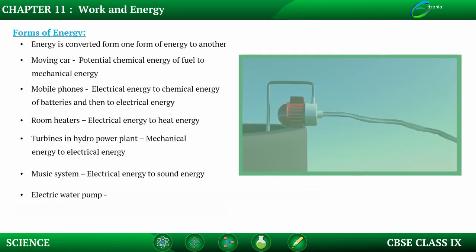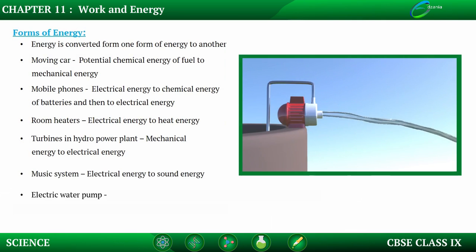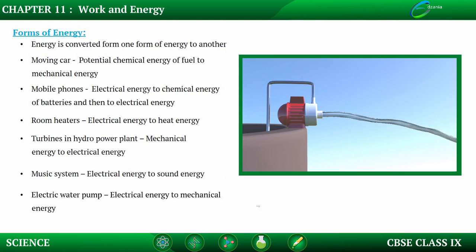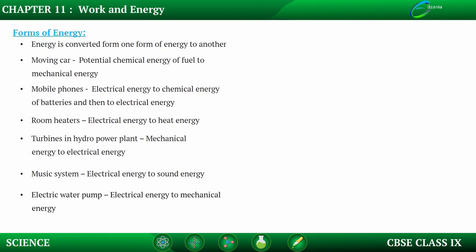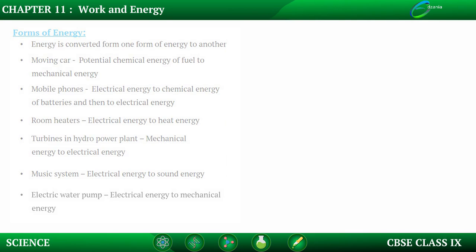In an electrical water pump, you switch on the motor — the input is electrical energy, and finally it is converted into mechanical energy which makes the water pump up. So these are various examples of different kinds of energy and how they are converting from one form to another.